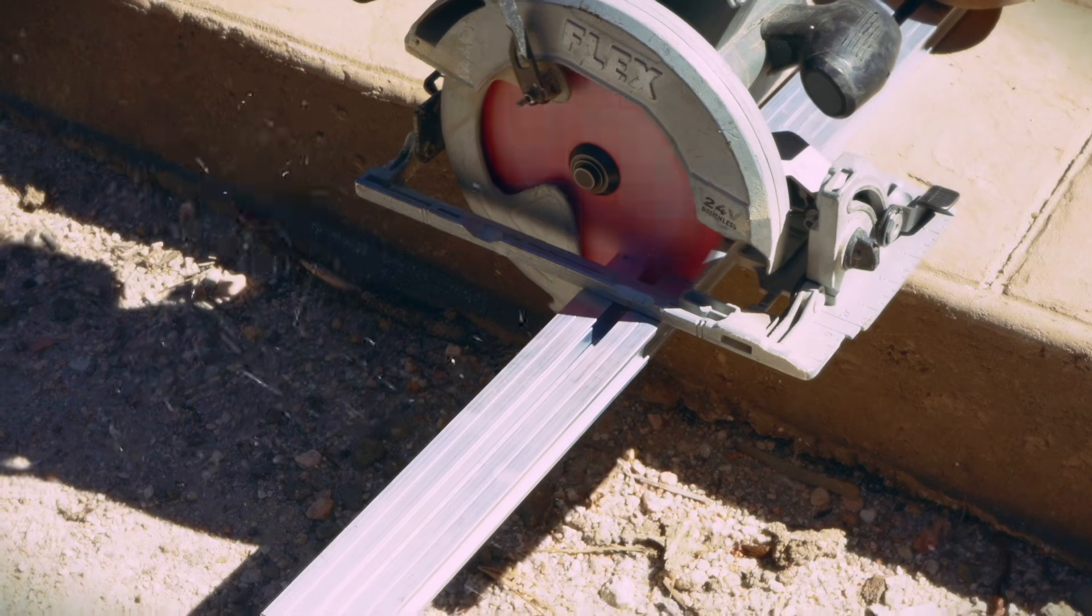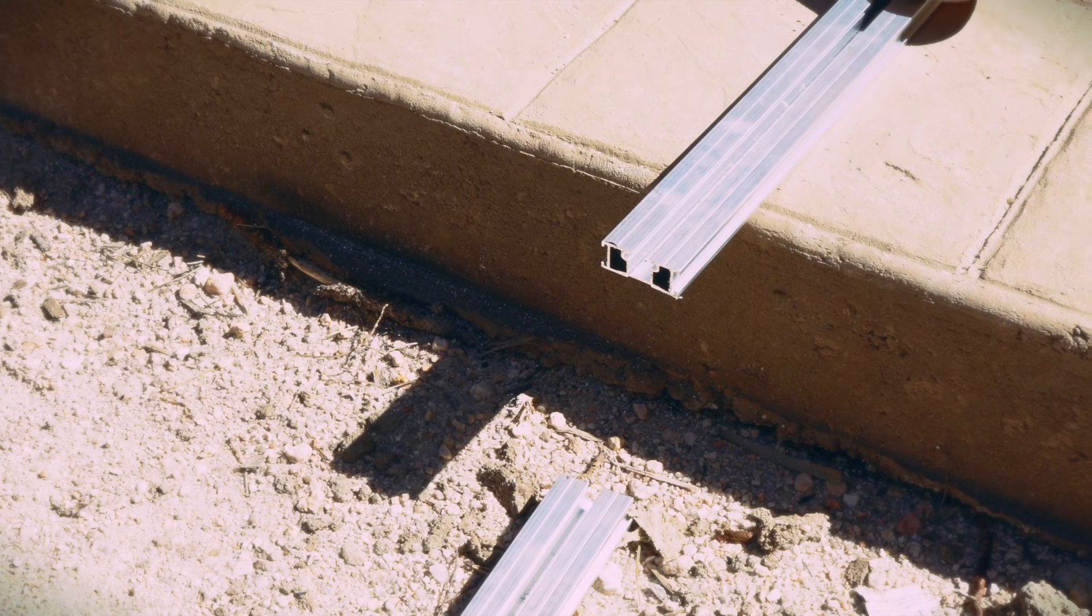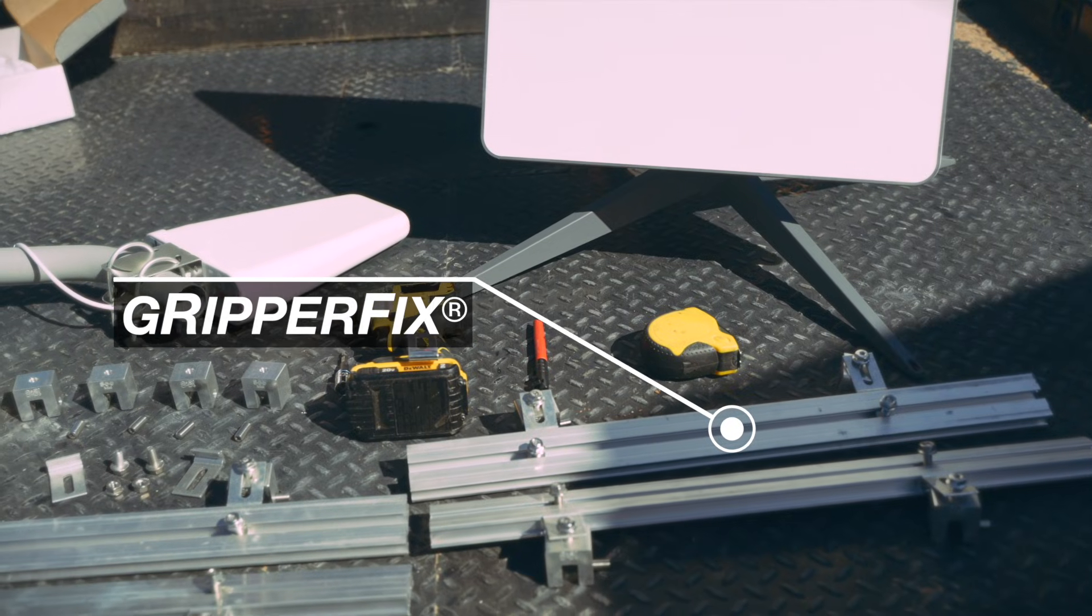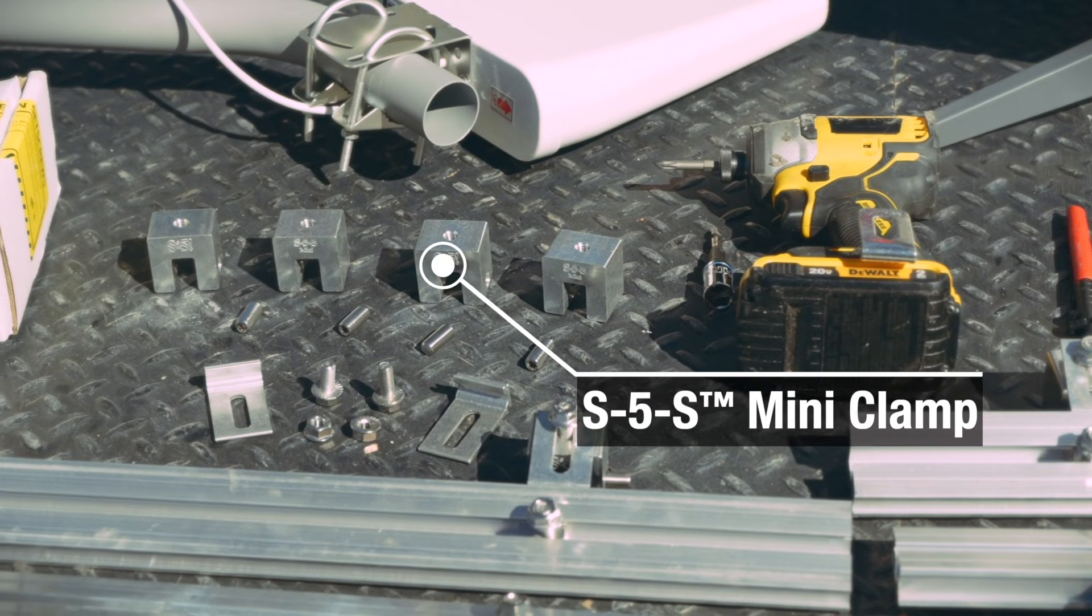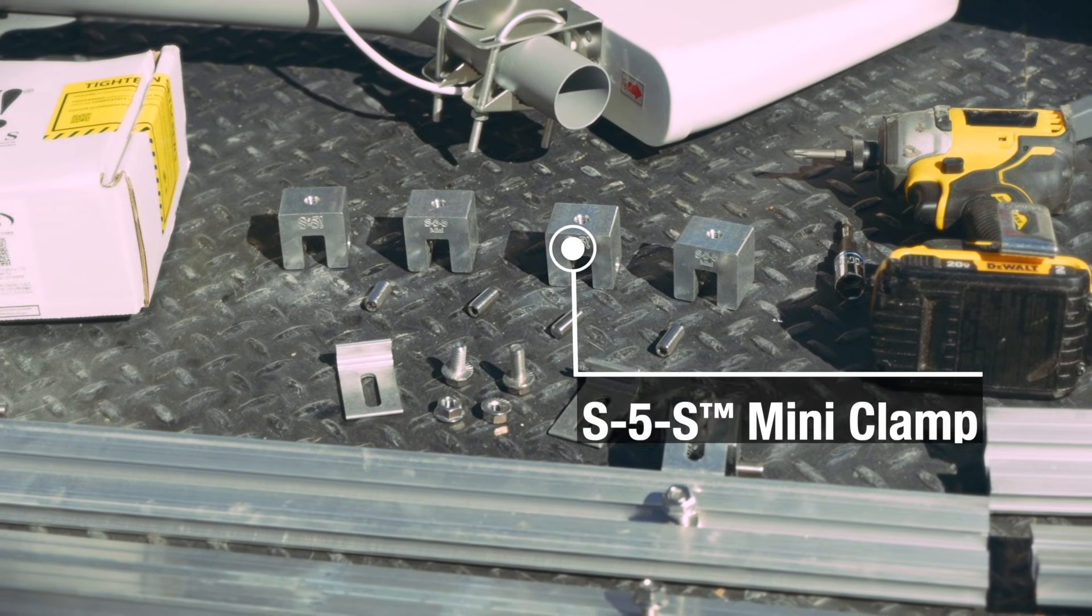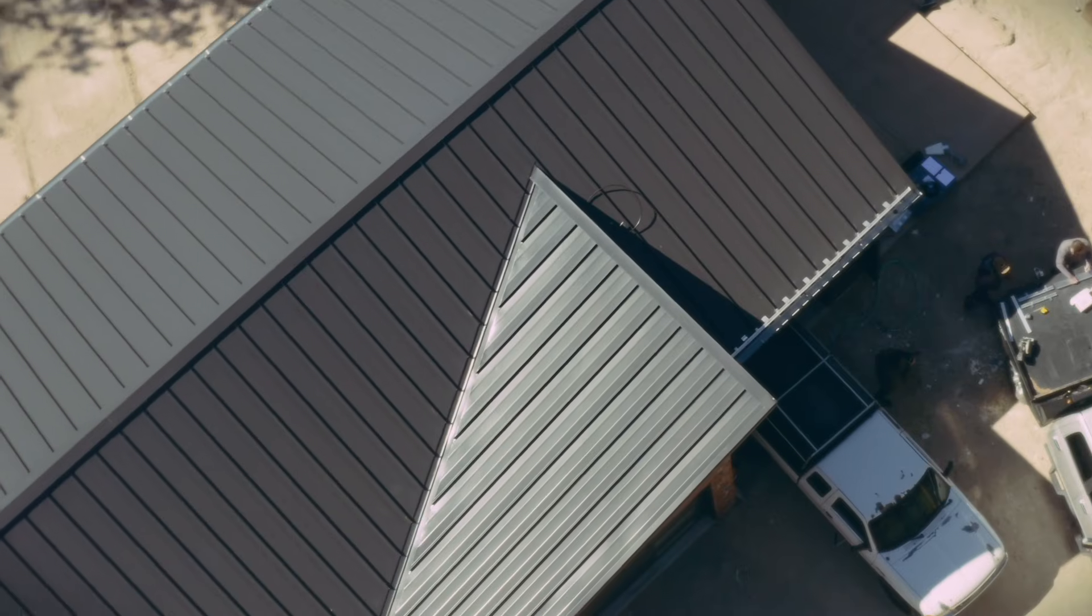Now, let's prep on the ground to make things easier once we're up on the roof. Here's a look at the equipment and tools we'll be using today. For this setup, we're pairing the Griperfix system with S5S mini clamps, which have a single set screw and can be positioned anywhere along the roof seams.